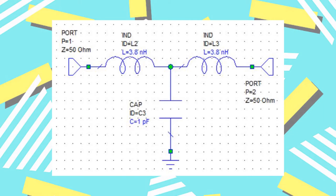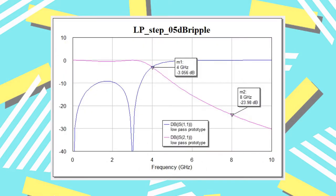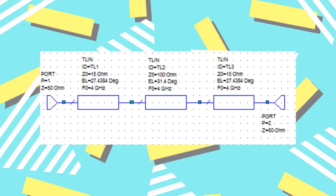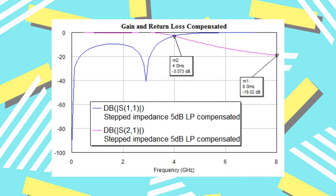From table 8.4's G values, the low-pass prototype was simulated in Microwave Office. Here is the gain and return loss of the simulated low-pass prototype. The filter was then implemented in ideal transmission lines, and the simulated gain and return loss for the ideal transmission lines is shown here.